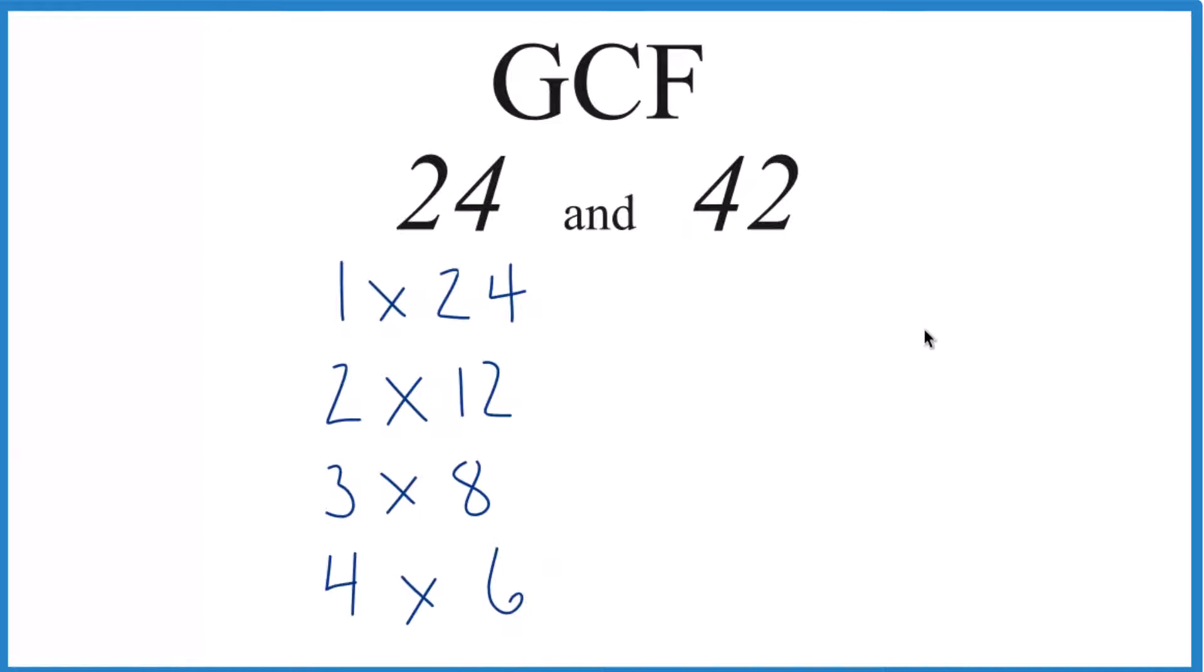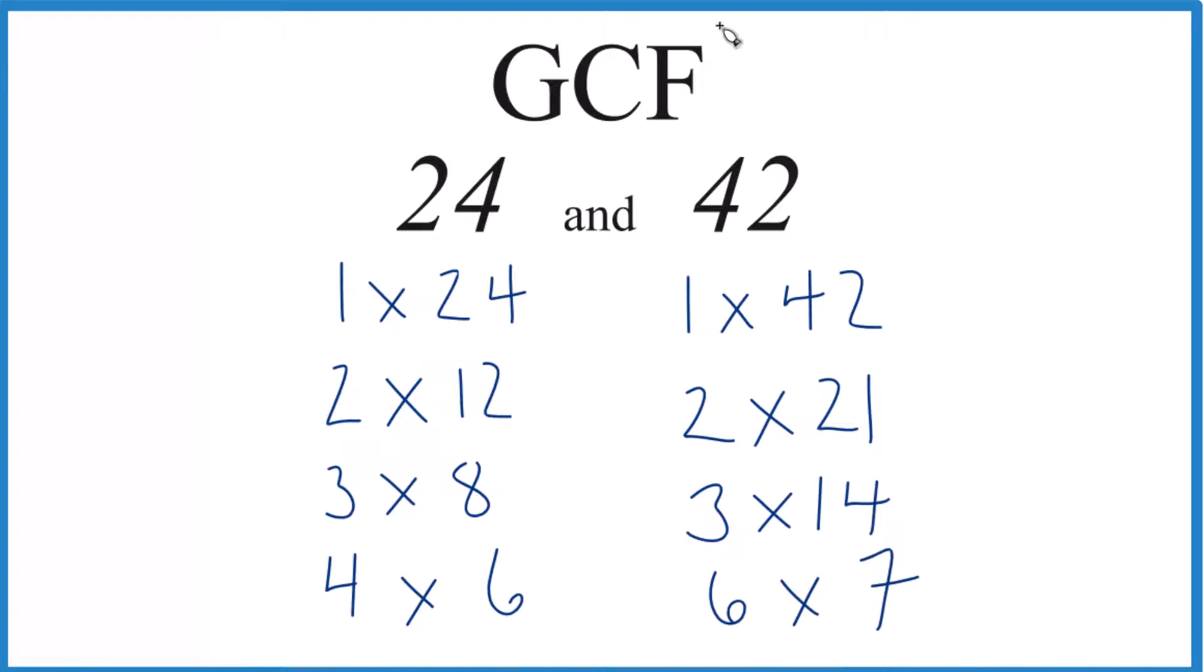For 42, we'd have 1 times 42, 2 times 21, 3 times 14, and 6 times 7. So we have the factors. Now we look at what's in common and choose the greatest one.